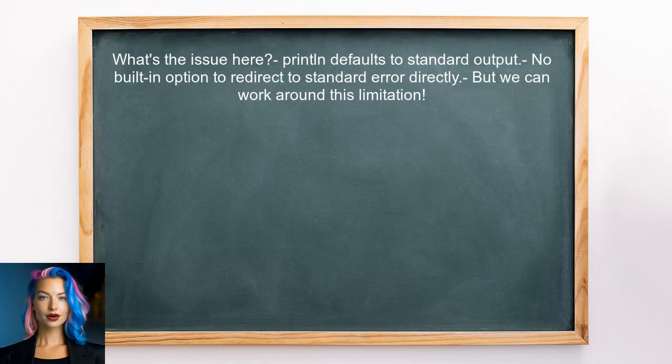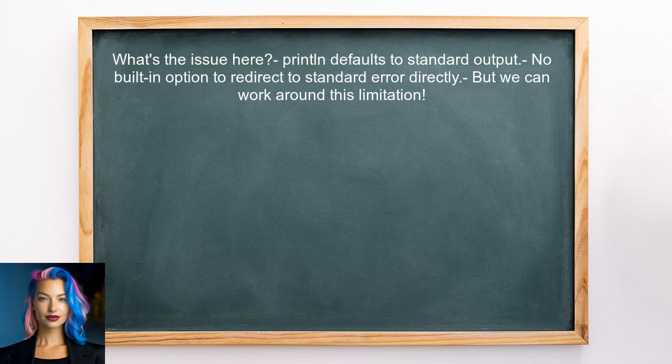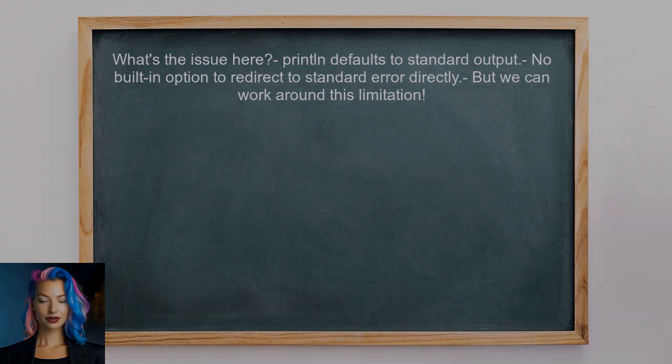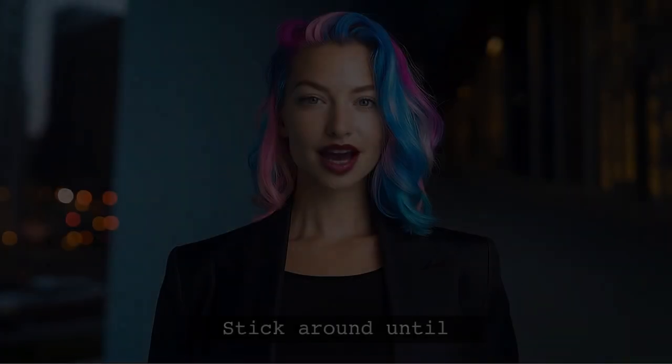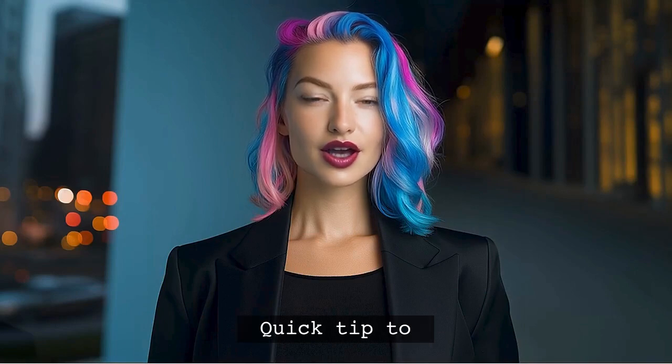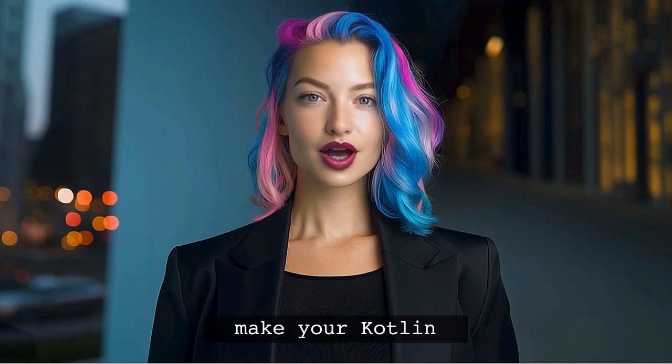So what's the issue here? The println function in Kotlin defaults to standard output and there's no built-in option to redirect it to standard error directly. But don't worry, we can work around this limitation with a few simple steps. And make sure to stick around until the end. I'll share a quick tip that will make your Kotlin coding experience even smoother.